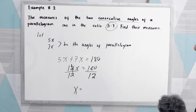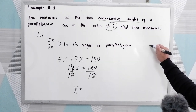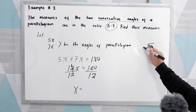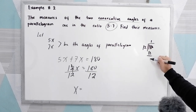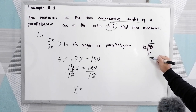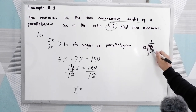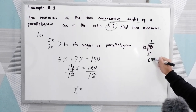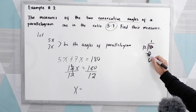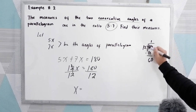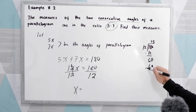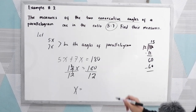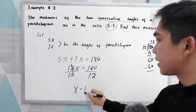So x is equal to 180 divided by 12, which equals 15.